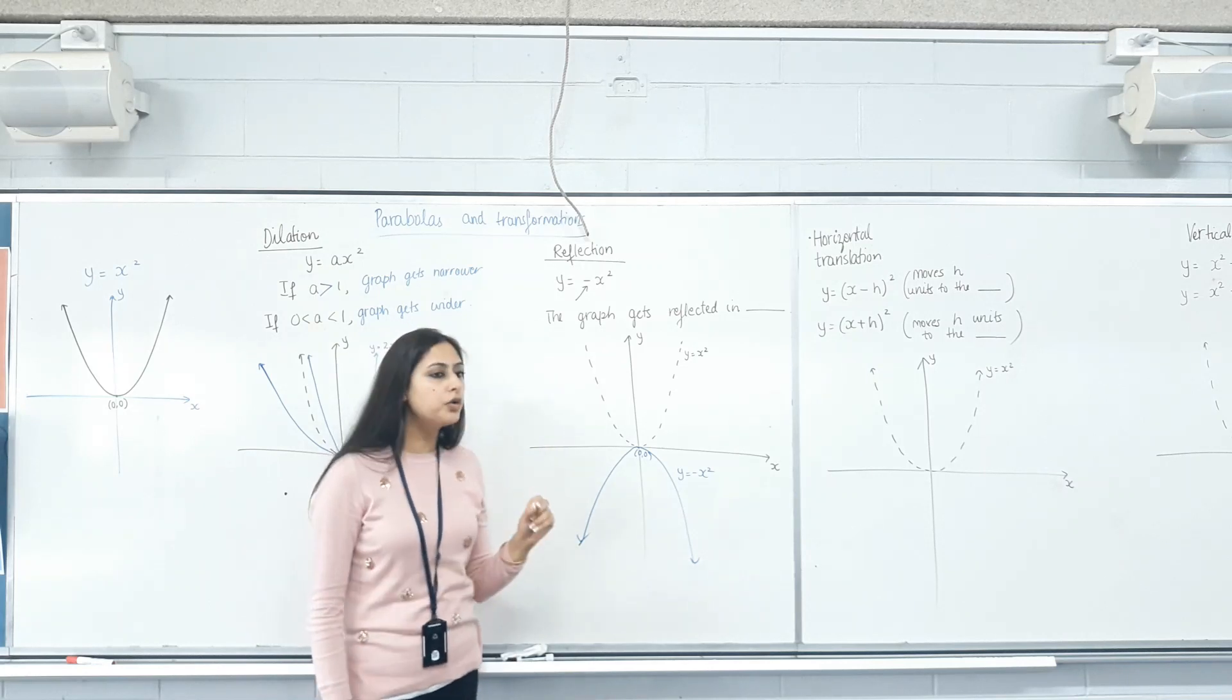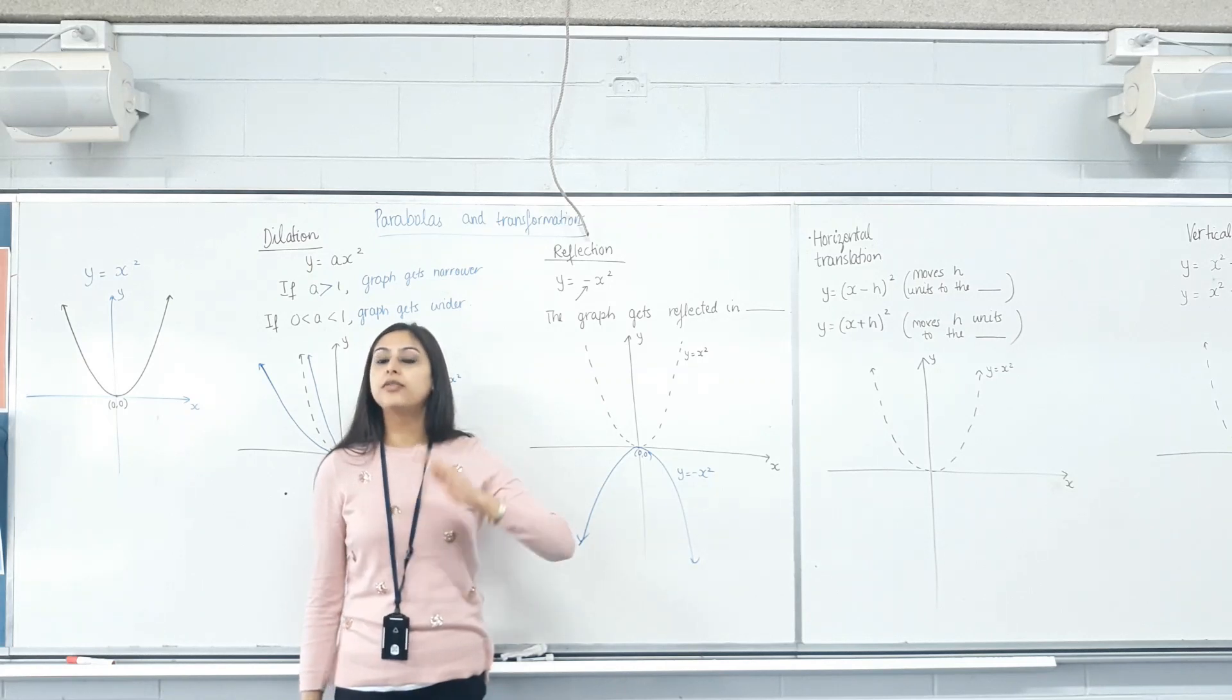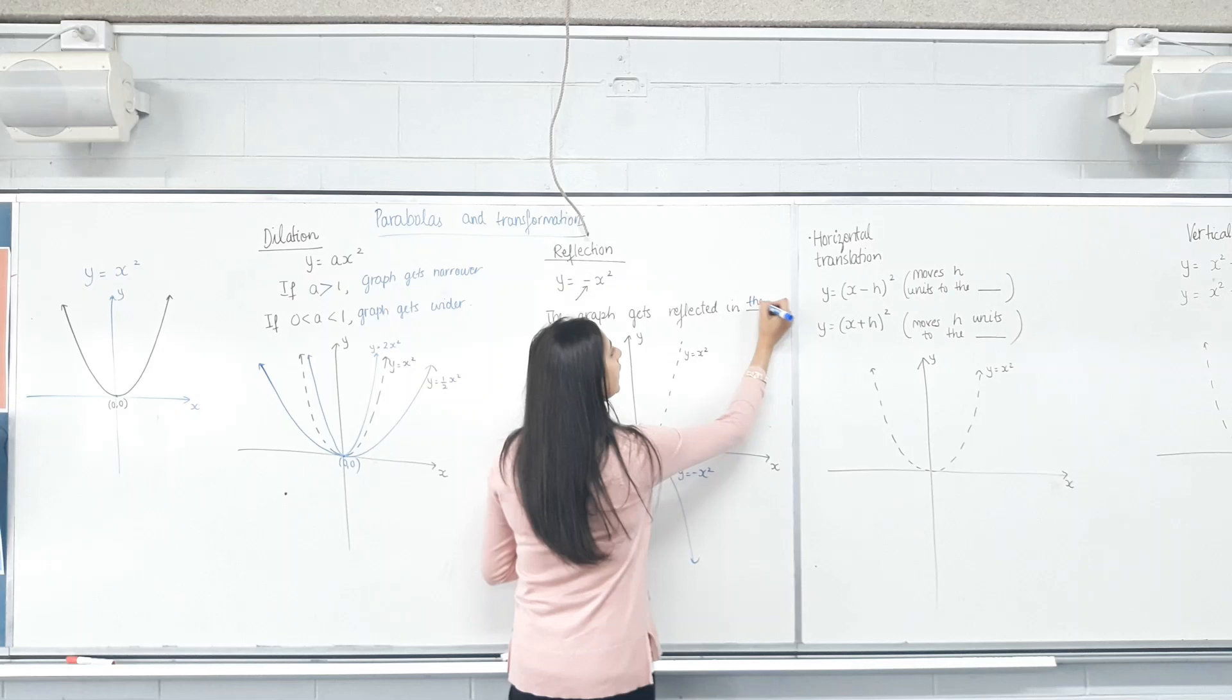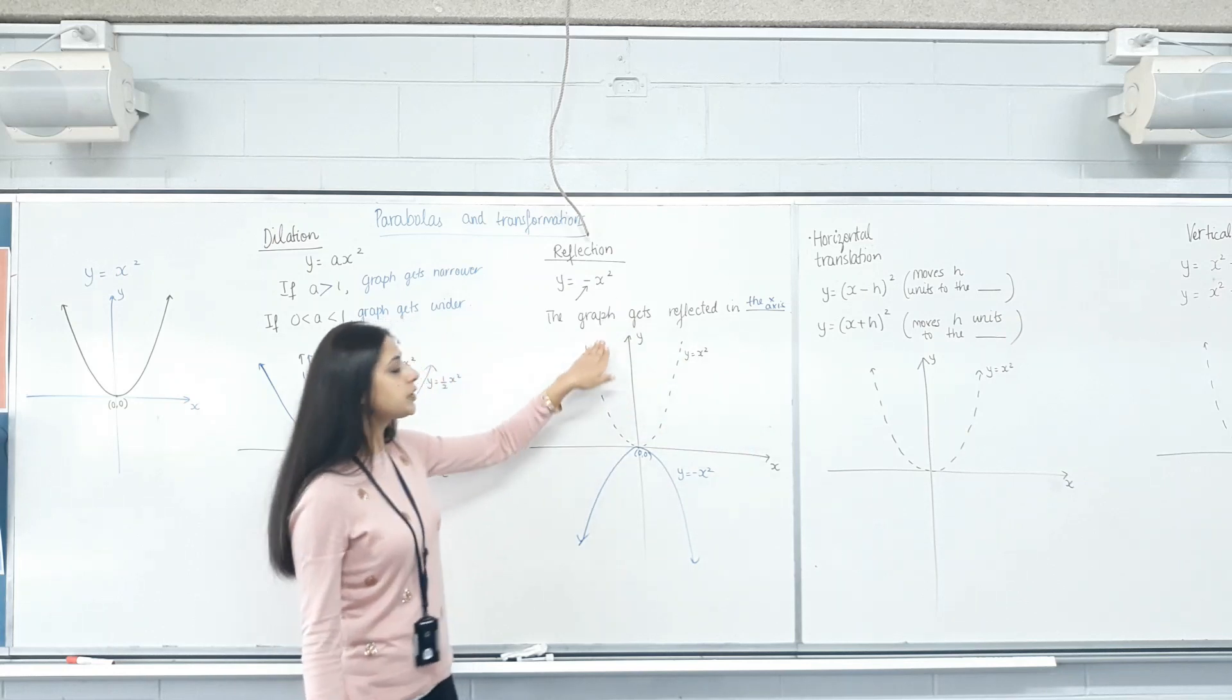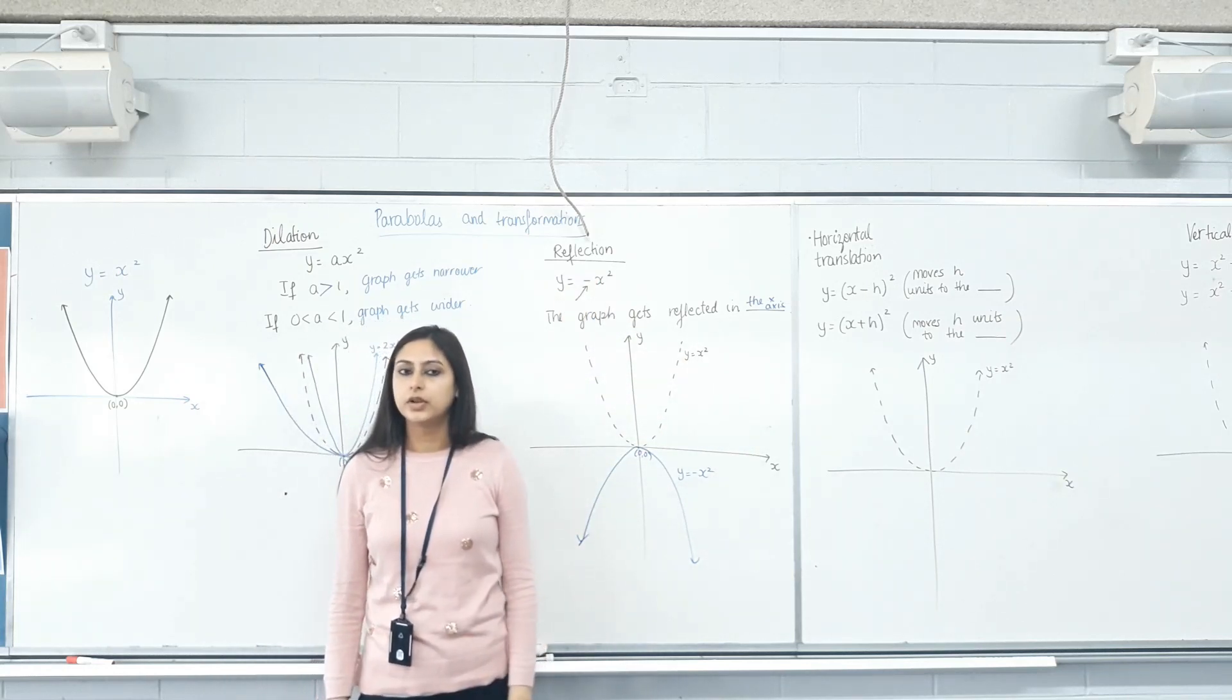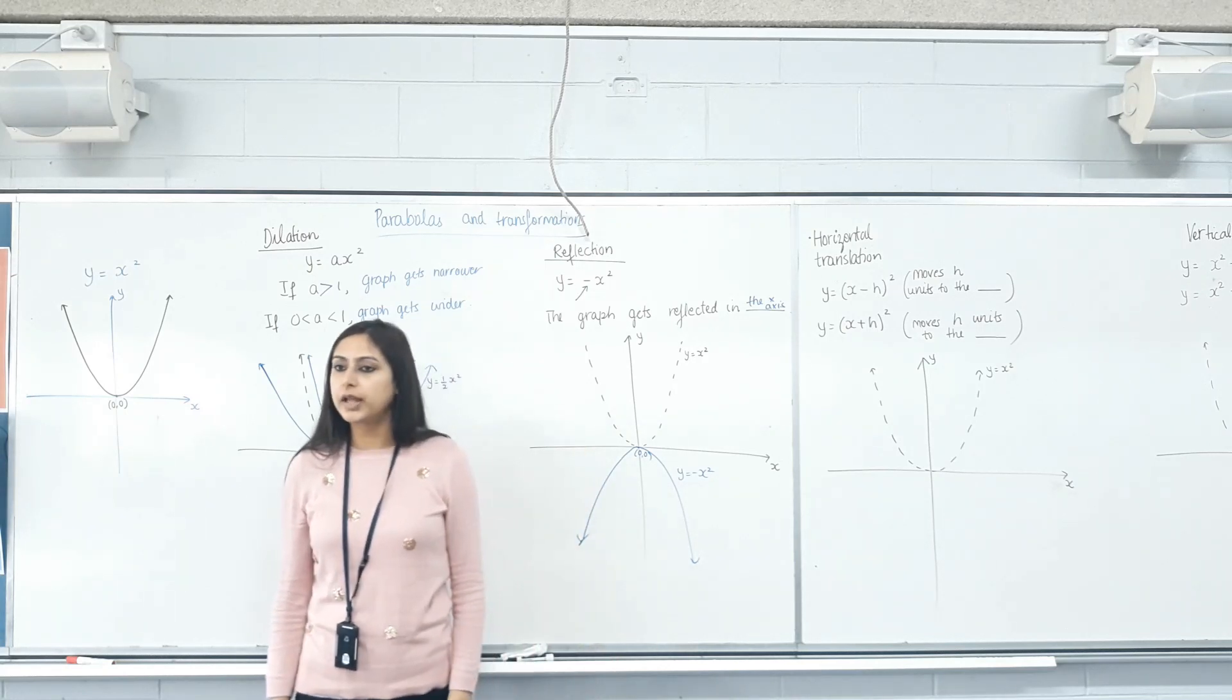Yes. So, the correct term is don't write it got flipped. I'm not going to give you marks. The graph got reflected in the x-axis. Make sense? So, x-axis is the mirror. This was the original graph. Its reflection is now what we're seeing if it's a negative. Mirror. So, what's it called? Reflected in the x-axis. Are we clear on that?